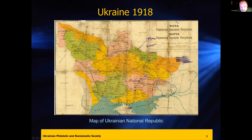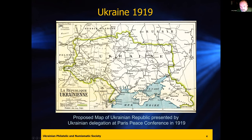This is a map presented by the delegation to the Paris Peace Conference in 1919 with the proposed borders of Ukraine, based on the ethnic population of different areas. The Kuban area, which is part of the Russian Federation, had a very large Ukrainian population — even today Ukrainian is spoken there predominantly. Areas like Belgorod, where the Russians are firing their missiles from, were all ethnic Ukrainian areas. The northern parts in Belarus were also included.